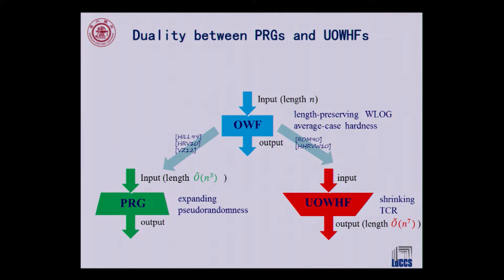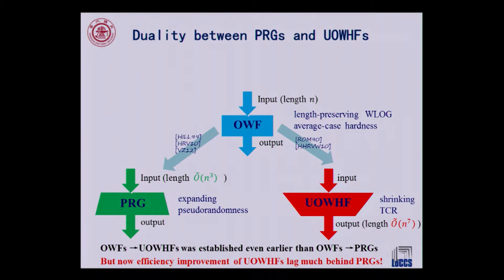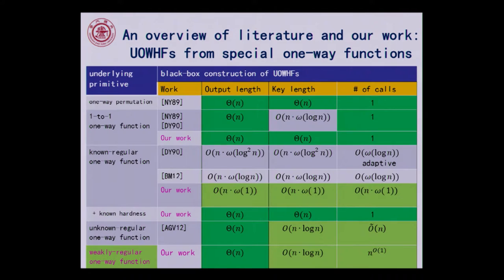The feasibility result was established in the '99 paper and recently improved: any one-way function on input of length n implies a PRG of seed length roughly n cubed. In the case of universal one-way hash functions, the output length is much longer — n to the power of seven. We are not going to improve this bound in this paper; we are doing a slightly different line, constructing woofs from special classes of one-way functions.